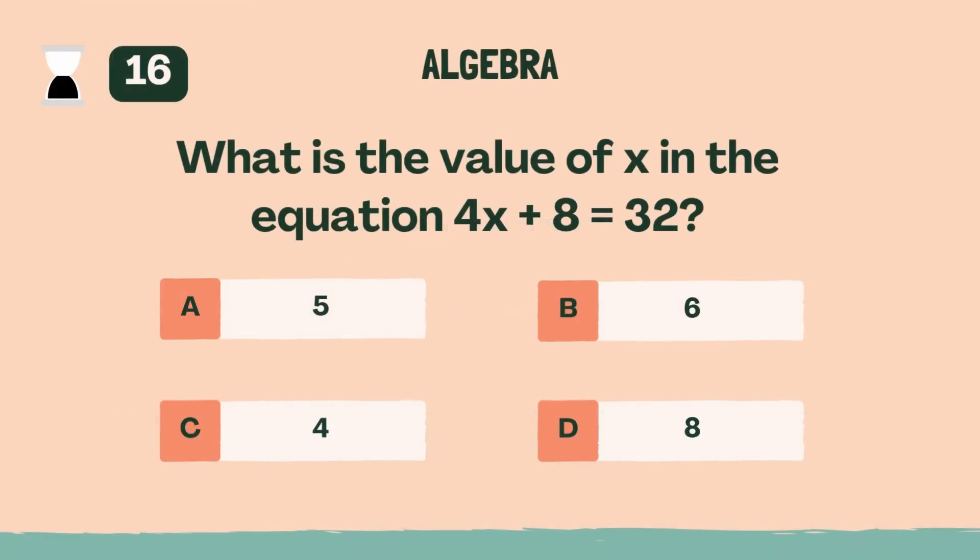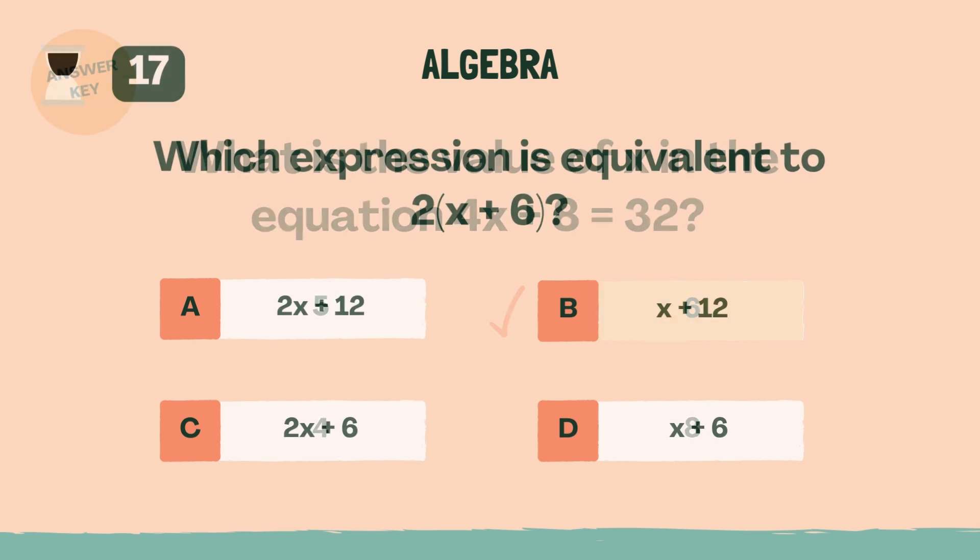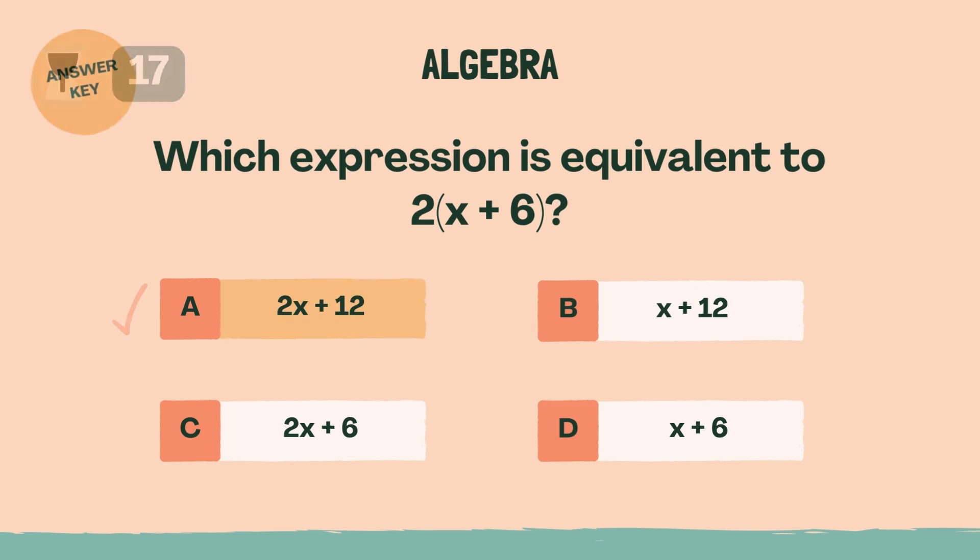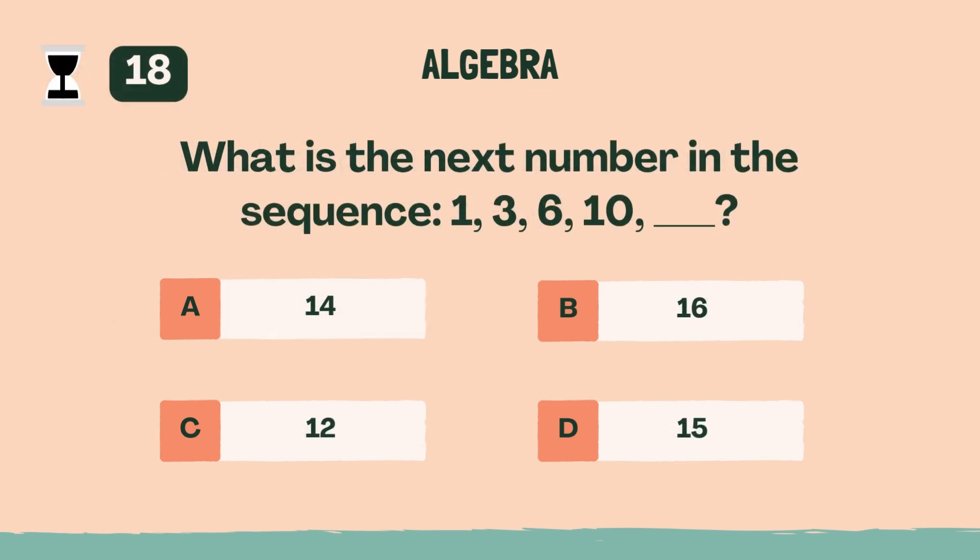What is the value of x in the equation 4x plus 8 equals 32? B, 6. Which expression is equivalent to 2 times x plus 6? A, 2x plus 12. What is the next number in the sequence?